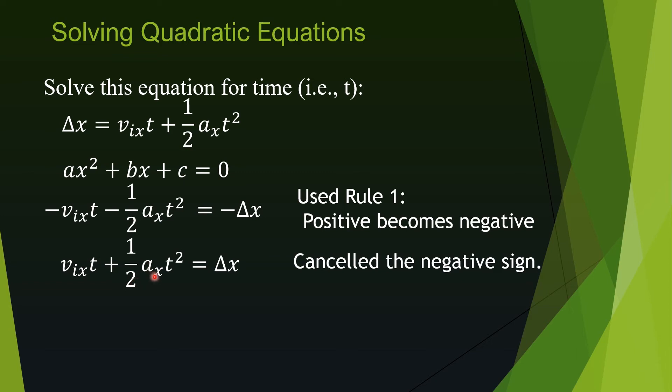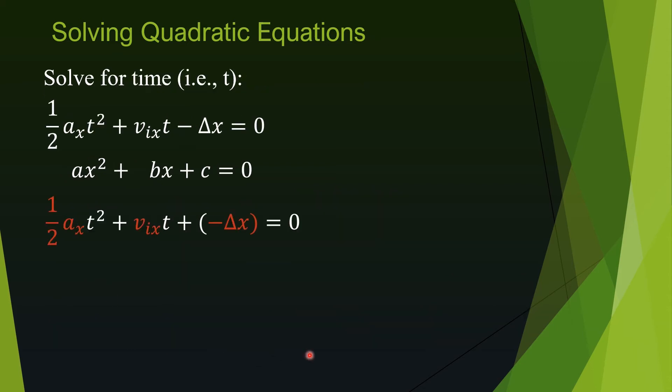Now finally we move the Δx to the left using rule number one. So positive Δx becomes negative Δx. And I also switch the place of these two terms so that the term with the t squared appears first. Notice the general quadratic equation has only positive terms.